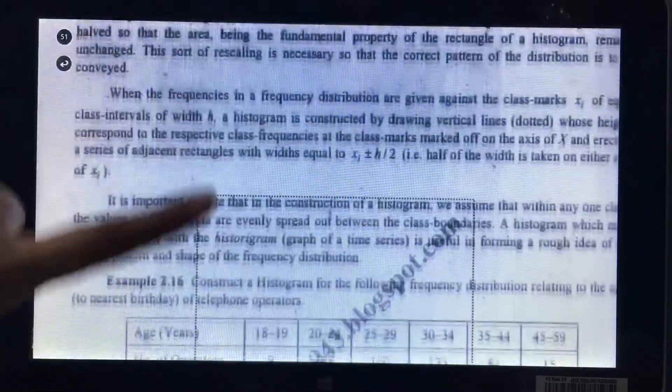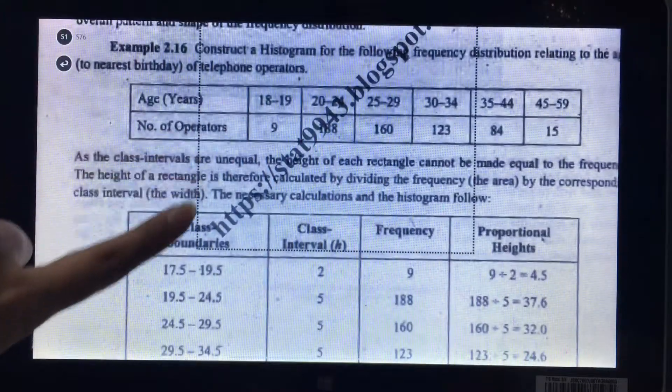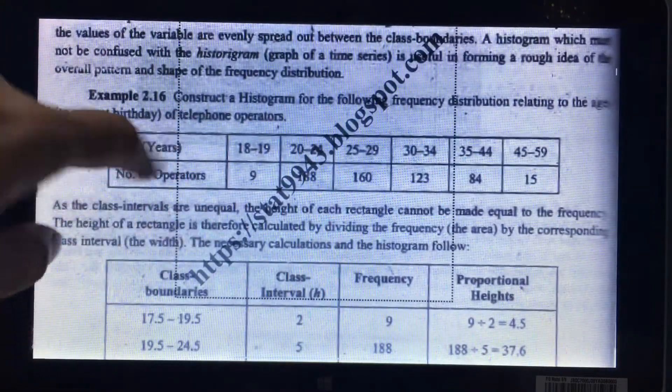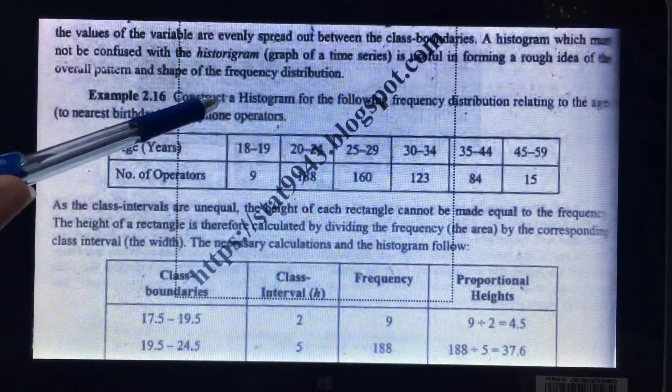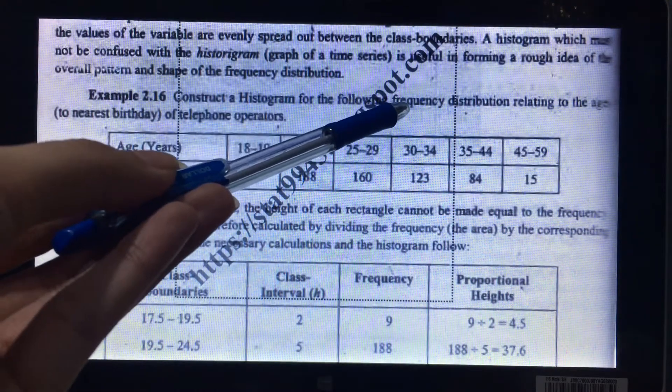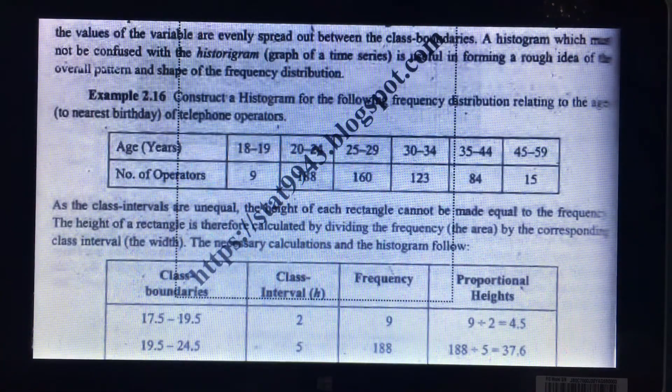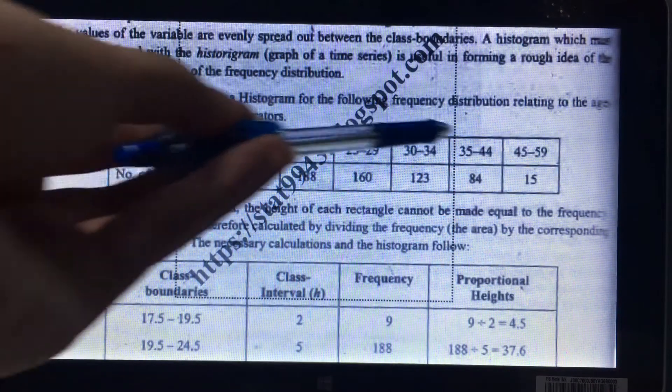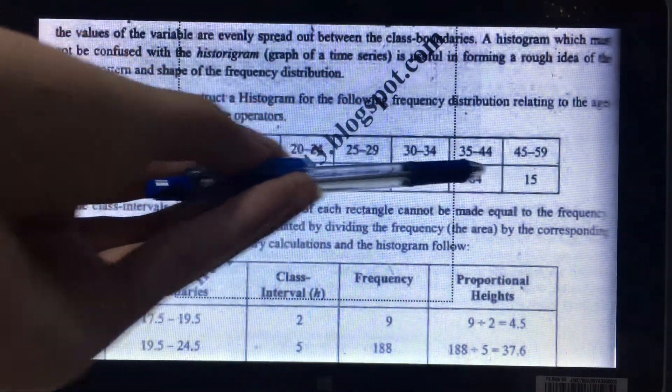So this is the data I have. We are asked to construct a histogram for the following frequency distribution relating to the ages of telephone operators. These are the ages given and these are the numbers of operators.